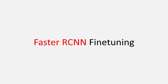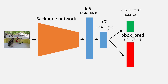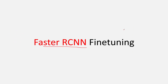In this video we are going to do Faster RCNN fine-tuning using PyTorch. The goal covers three things: first, I'll explain what fine-tuning is and what the code means — that's the crux of Faster RCNN fine-tuning. Second, I'll explain the backbone network, the fully connected layers, and how the final layers are changed for fine-tuning. Lastly, I'll give you a code walkthrough showing how to use Faster RCNN for fine-tuning.